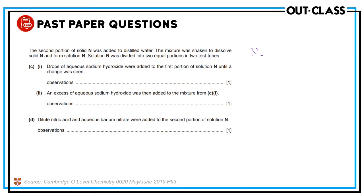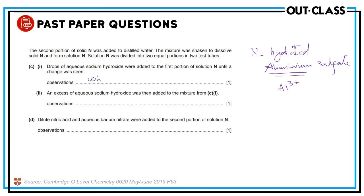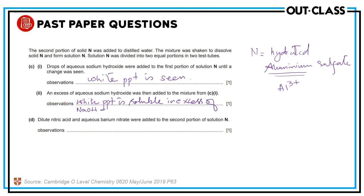N is hydrated aluminum sulfate. Drops of aqueous sodium hydroxide were added to the first portion until a change was seen — meaning you are adding a few drops of sodium hydroxide. Aluminum ion is a cation, and aluminum ion with sodium hydroxide gives a white precipitate. The white precipitate is soluble in excess NaOH, forming a colorless solution.